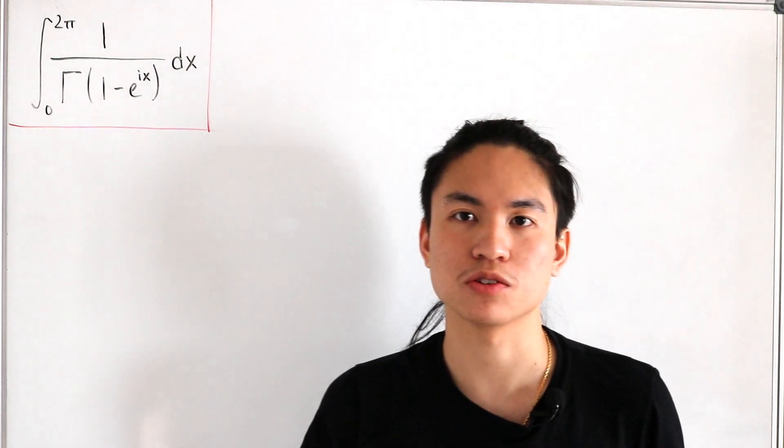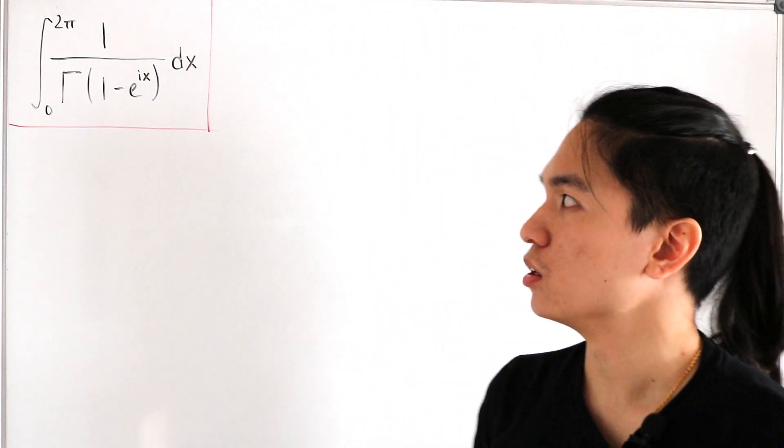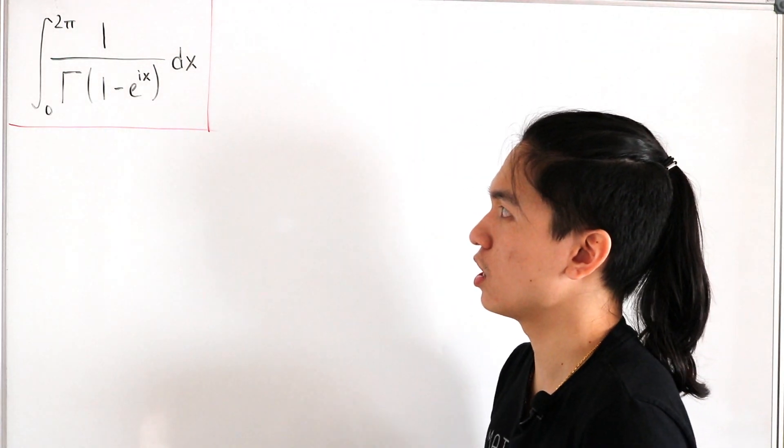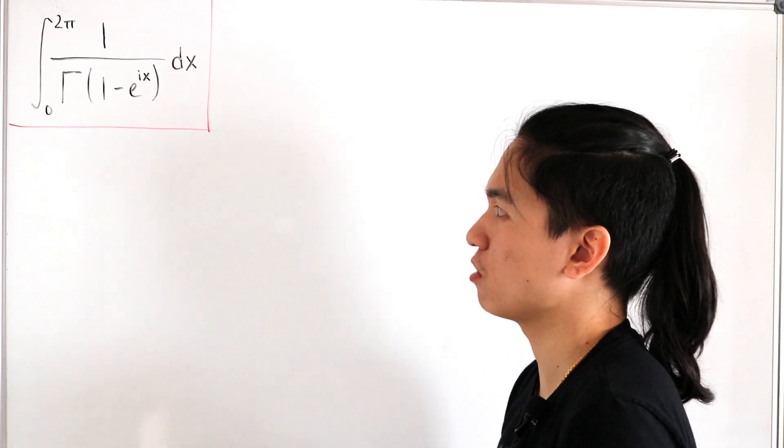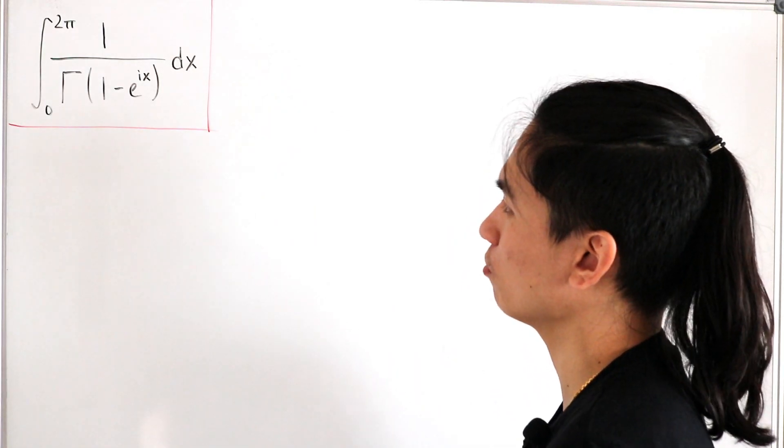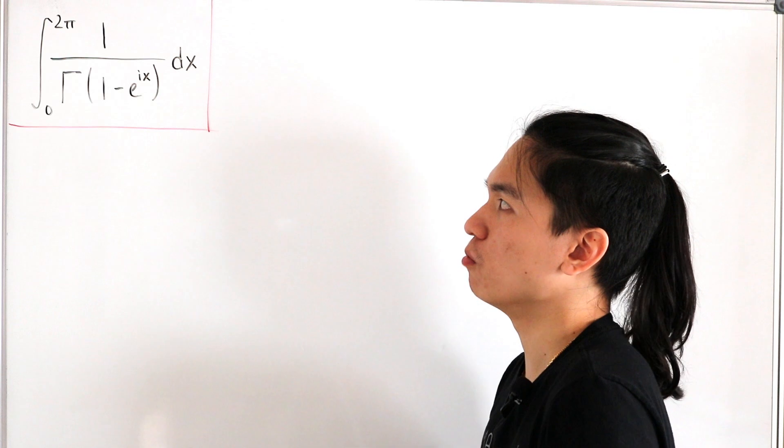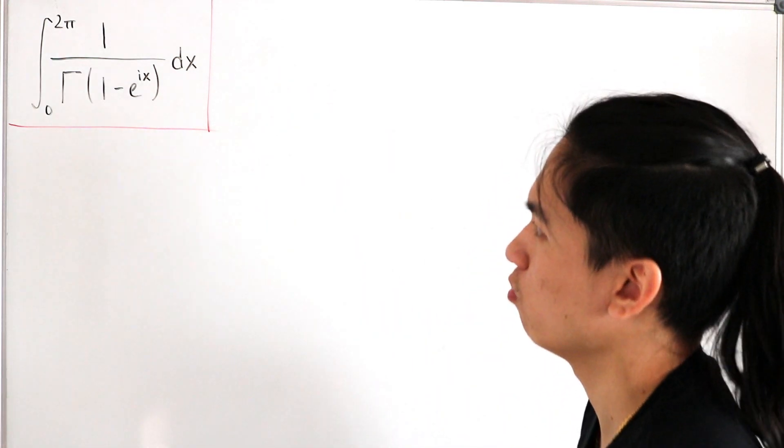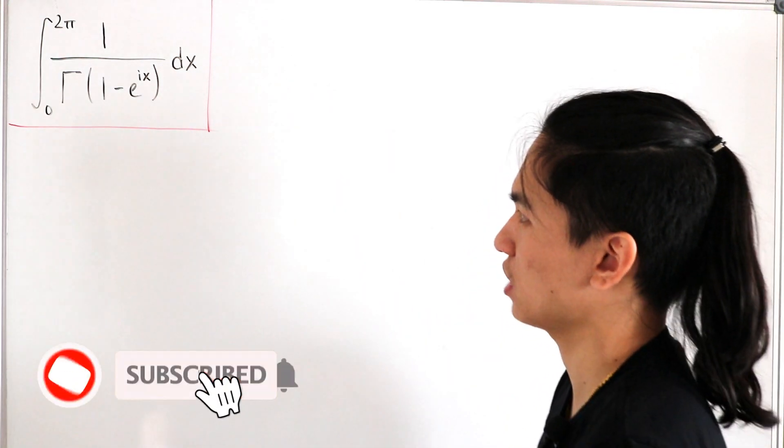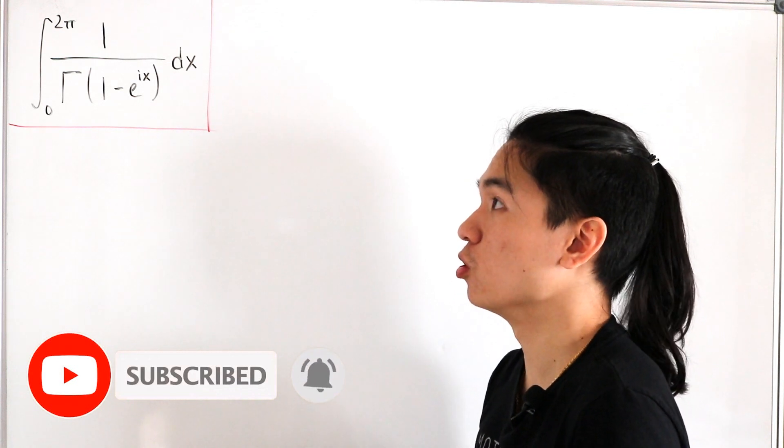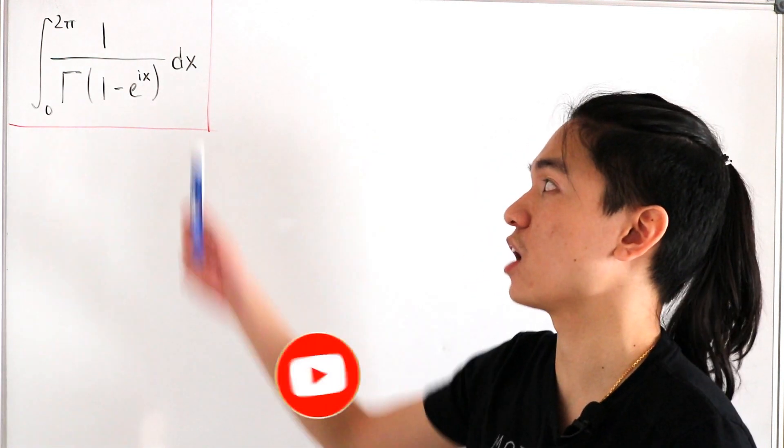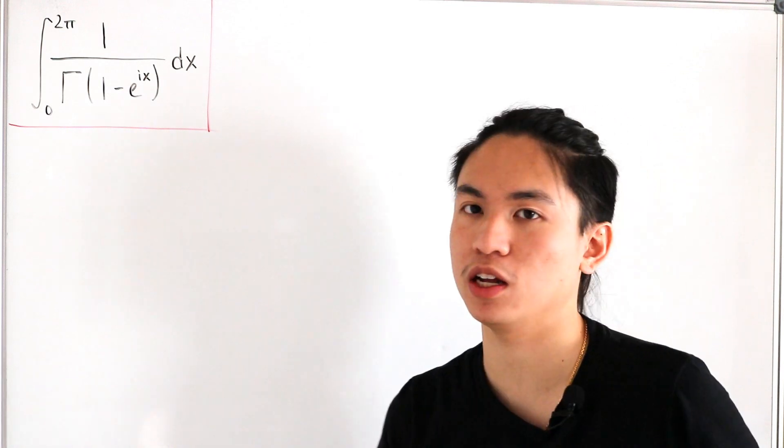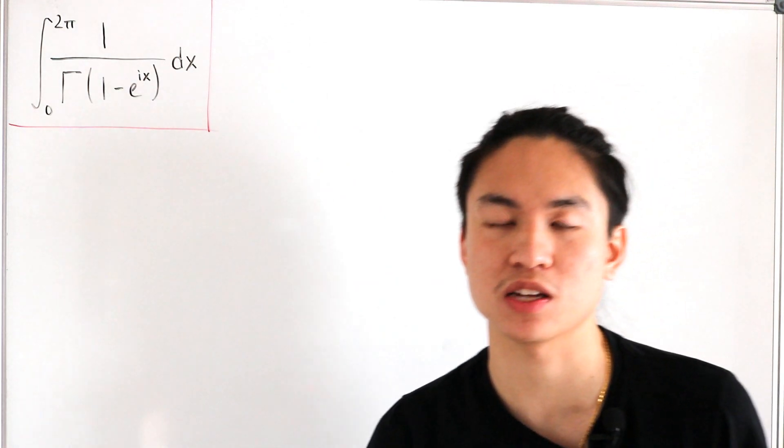Okay, so we'll go back to another video. So today's integral involves the gamma function. We have the integral from 0 to 2π of 1 divided by gamma of 1 minus e to the power ix dx. So since we have an exponential, Euler's formula e to the ix, that means we're getting a little bit into the world of complex analysis.